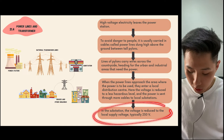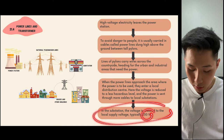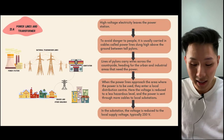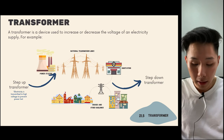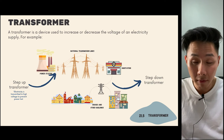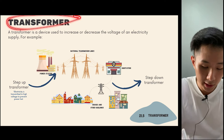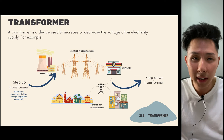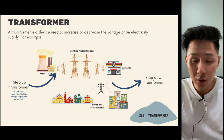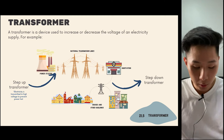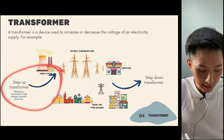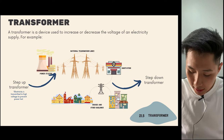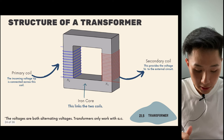In the substation, voltage is reduced to local supply voltage, around 230 volts, and then carried to our houses. A very important invention that allows this is the transformer — a device used to increase and decrease the voltage of electrical supply. There are two types: a step-up transformer, which increases the voltage, and a step-down transformer, which decreases it.